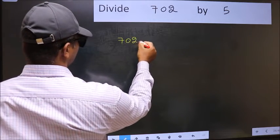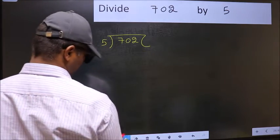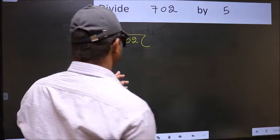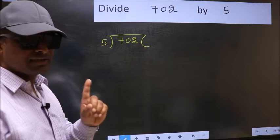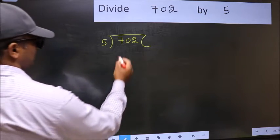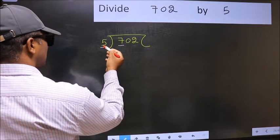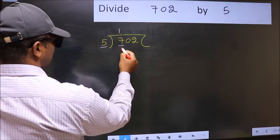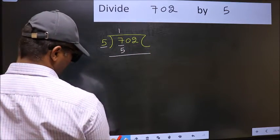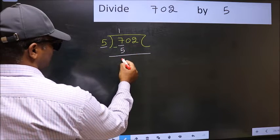702 and 5 here. This is your step 1. Next, here we have 7 and here 5. A number close to 7 in 5 table is 5 once 5. Now you should subtract 7 minus 5, 2.